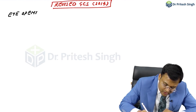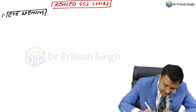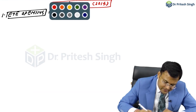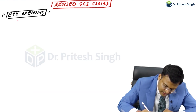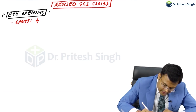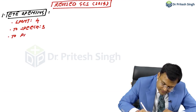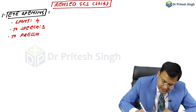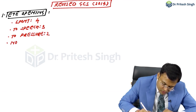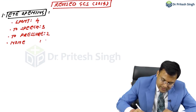The first component is Eye Opening. If it is Spontaneous, the score is 4. If it is To Speech, the score is 3. If it is To Pressure, the score is 2. And if there is no opening — None — the score is 1.